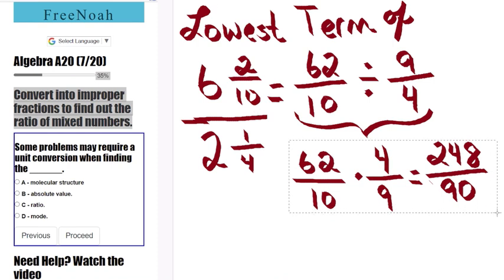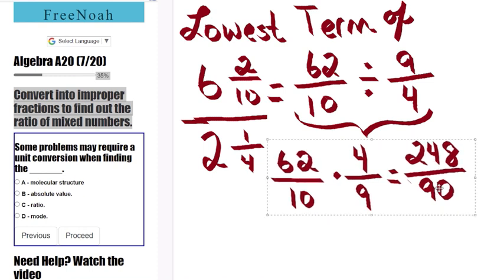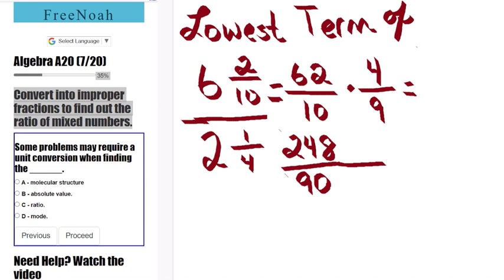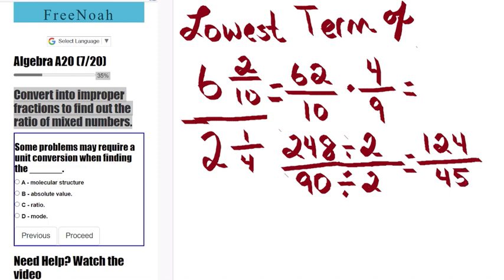We can simplify this to an even lower term by dividing the numerator and denominator by 2. Let's take 248 divided by 2 over 90 divided by 2. 248 divided by 2 is 124, and 90 divided by 2 is 45.